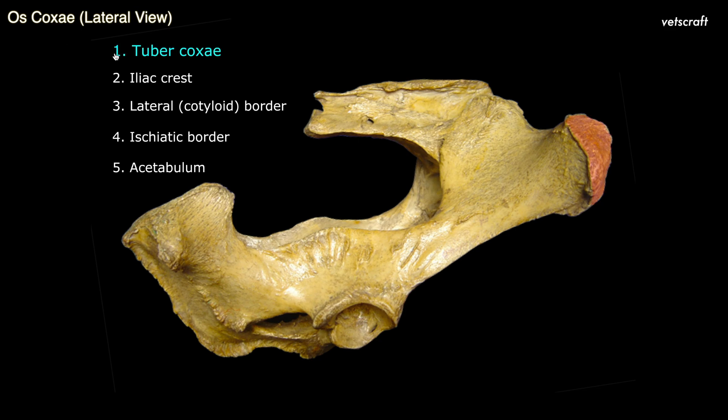Tuber coxae is the external angle of ilium. It is very large, prominent, and composed of three tuberosities in ox. The iliac crest connects the external and internal angles of ilium. It is formed by the dorsal border of ilium.